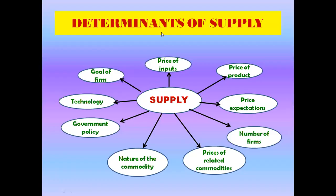Now let us see the factors affecting supply. The factors are: price of the product, price expectation, number of firms, prices of related commodities, nature of the industry, government policy, technology, goals of the firm, and prices of inputs. I will discuss them one by one in detail.